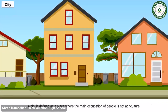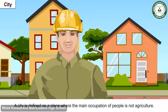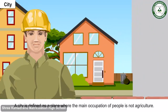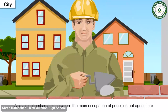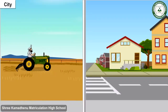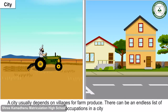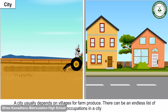A city is defined as a place where the main occupation of people is not agriculture. A city usually depends on villages for farm produce. There can be an endless list of occupations in a city.